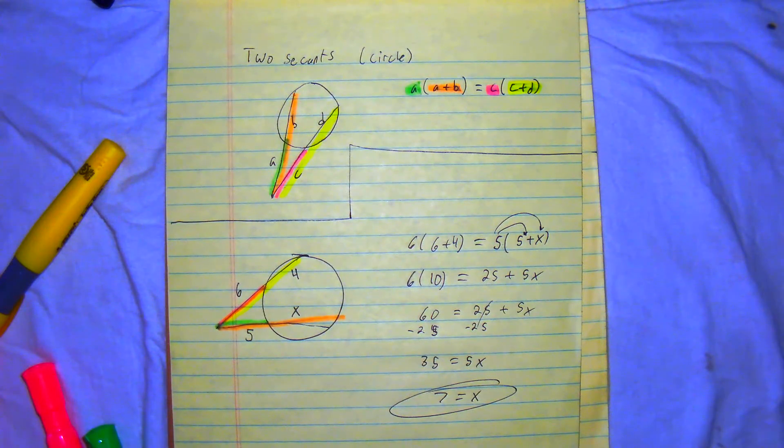All right. And that is how you do the line segments when you have 2 secants in a circle.